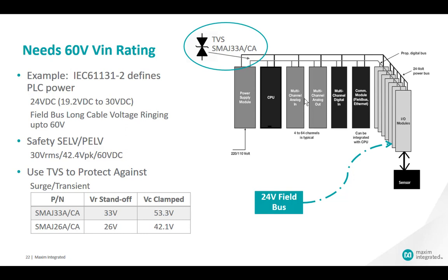In an industrial PLC system with power supply modules, CPU card, and I/O modules: when lightning strikes, there can be as much as 500 volts for tens of microseconds at the output of the power supply modules. For fieldbus systems with long cables, the voltage on the fieldbus can ring and double its input voltage — up to 60 volts. To protect against 500-volt transients and inductance ringing, a TVS is used, clamped across the output of the power modules. When selecting a TVS, there are two very important parameters to consider.